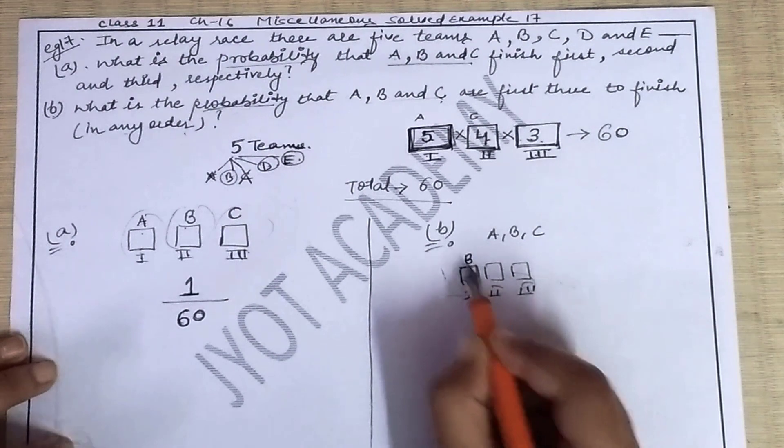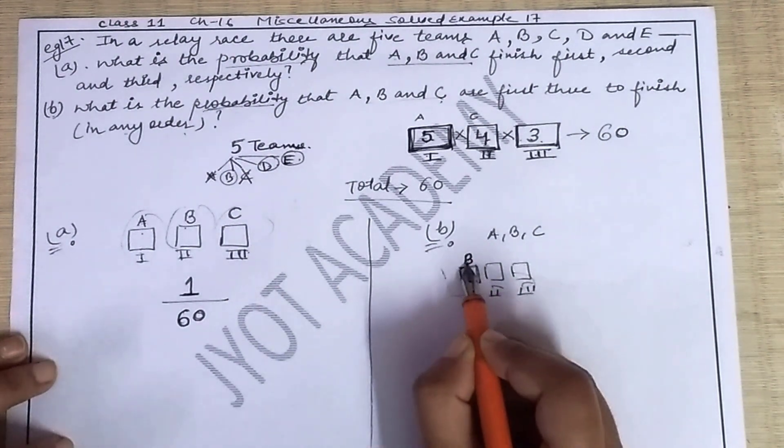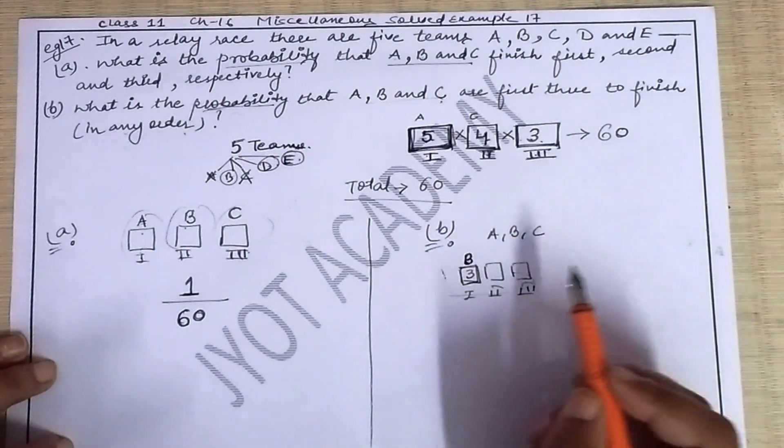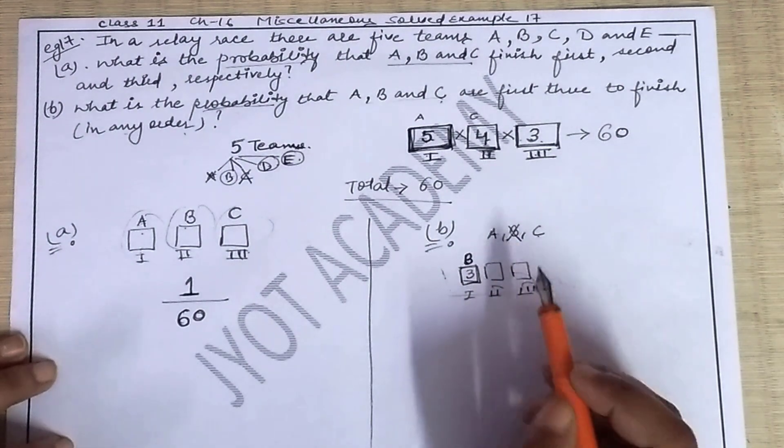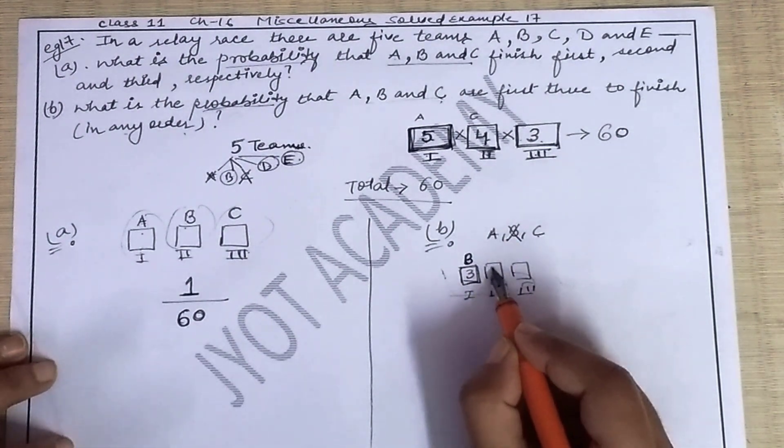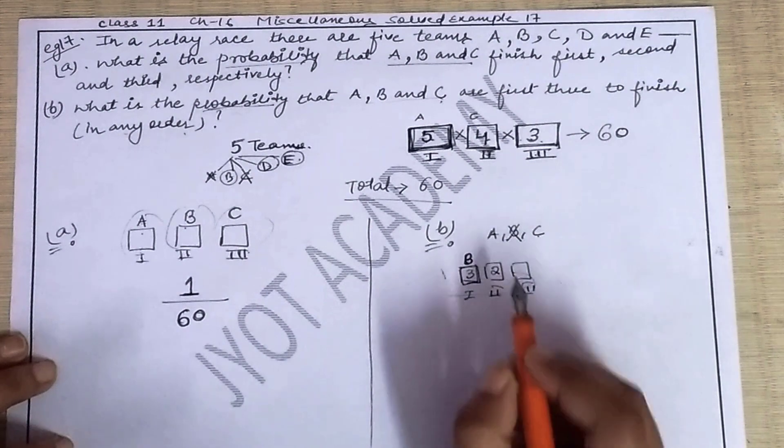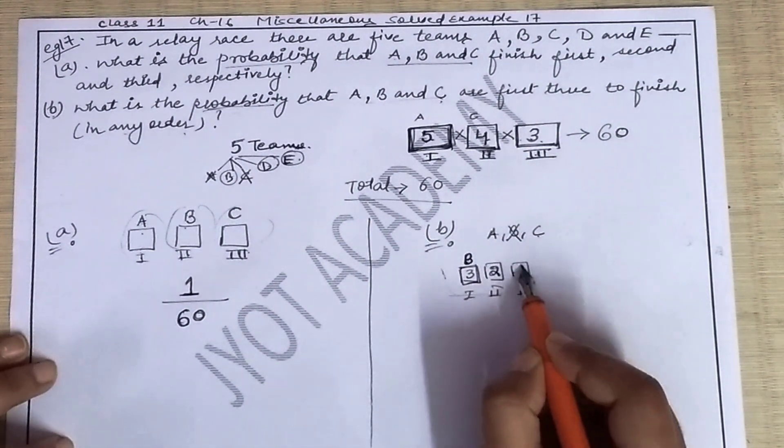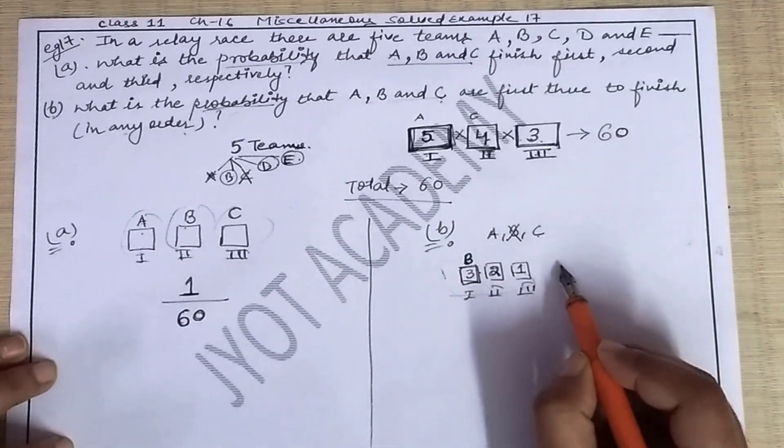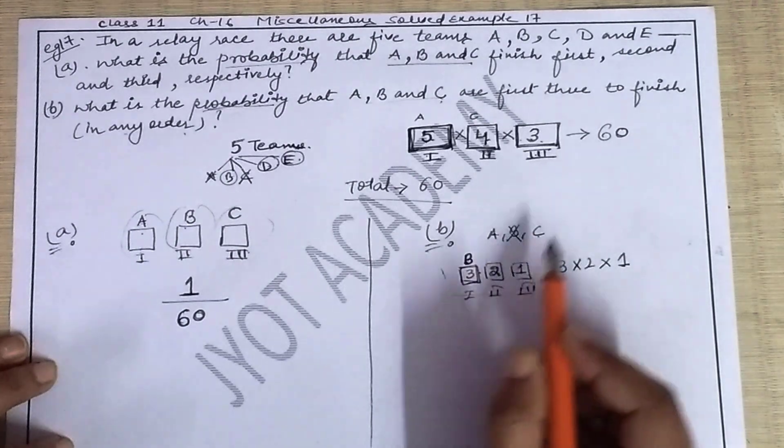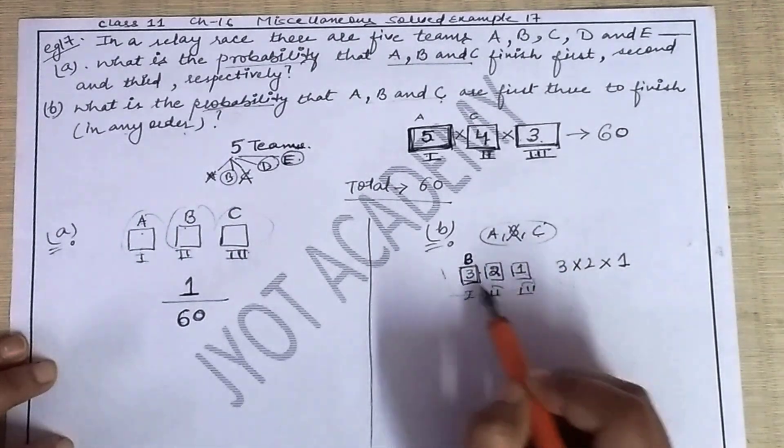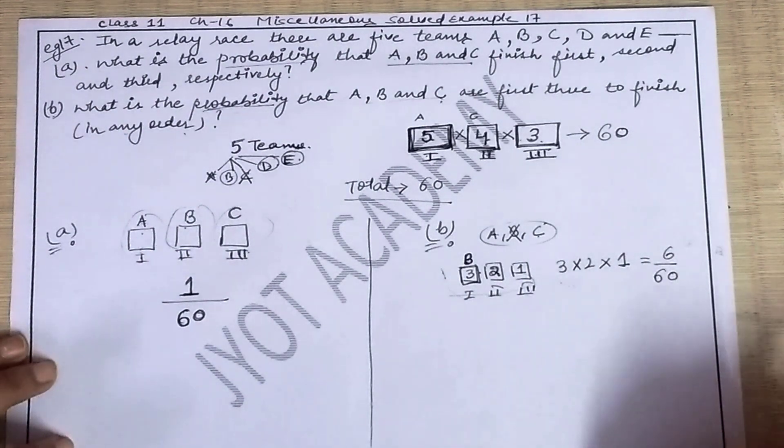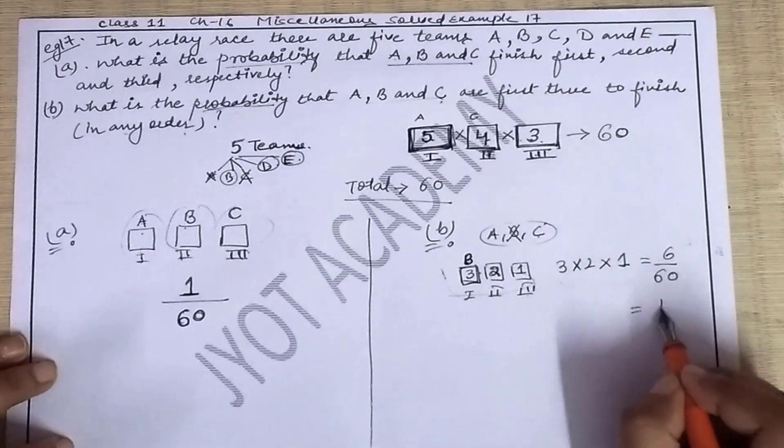Suppose team A comes here. Suppose C comes here. Suppose B comes here. So three teams remain. For second position, someone can come from A to C to B. So you have A, B, C in any order. So here 3 factorial equals 6 will come on top, and total comes at the bottom because you're finding probability. So that means one upon ten.